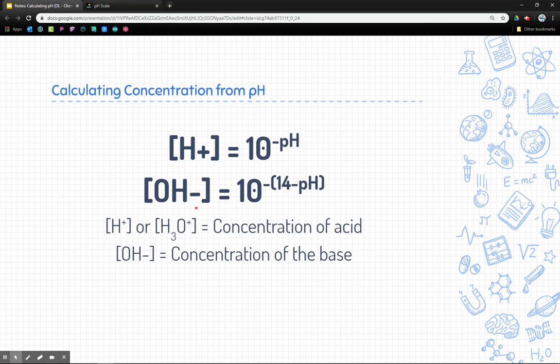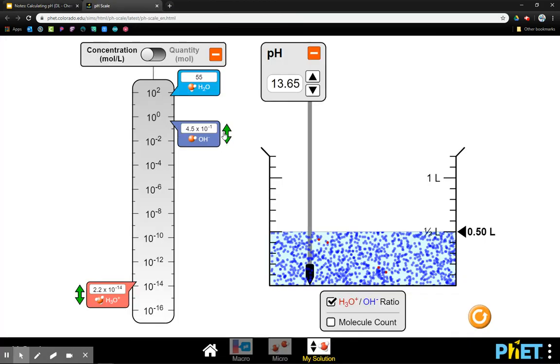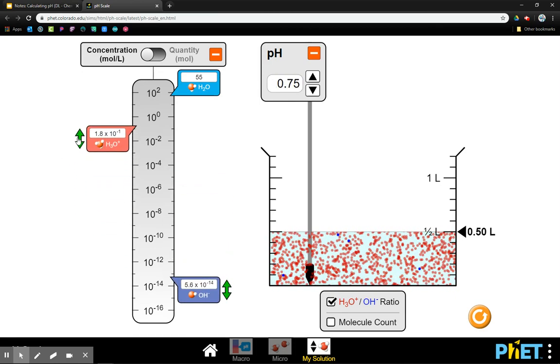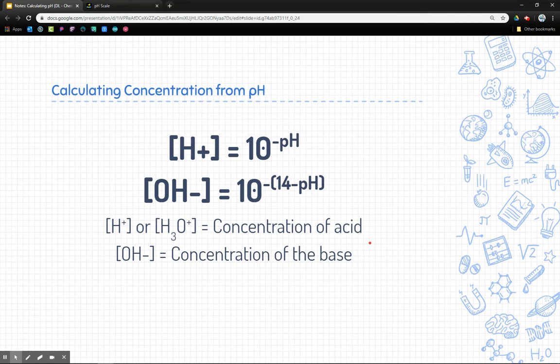Now to find the concentration of the base, it's very similar. 10 and then an exponent is negative. And then you do 14 minus the pH. The reason this works is because if you remember the pH scale is on a scale from 0 to 14. And if you remember back in our simulation back here, if you increase the hydronium concentration, the hydroxide concentration kind of goes in the opposite direction. And so we just take 14 minus the pH and we're going to figure out what the OH- concentration is.